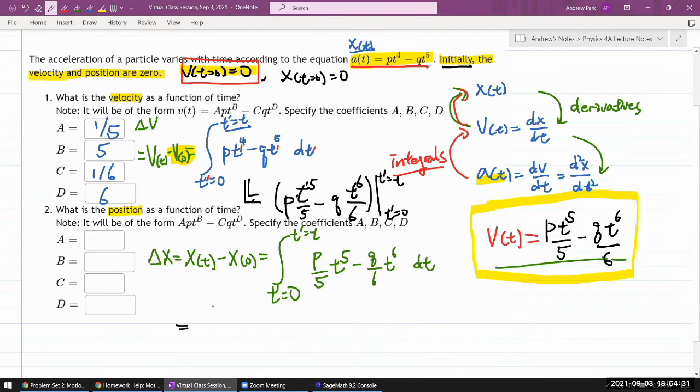So the antiderivative of this, I'll go more quickly. It could be t to the six divided by six. So it's the same thing I did for this term here. So p over five times the six is 30, t to the six minus q divided by, so it's going to be t to the seven divided by seven. So six times seven is 42, t to the seven evaluated from t prime is equal to zero into t prime equals t.